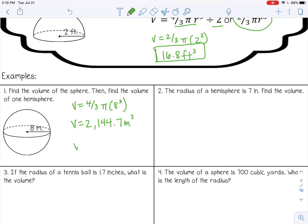And then if I want the volume of one hemisphere, I can just divide that by two, and I get 1,072.3 meters cubed.